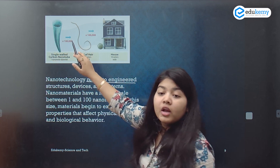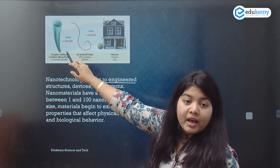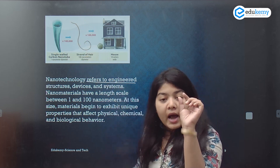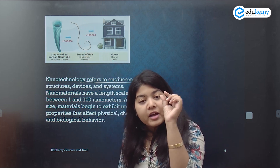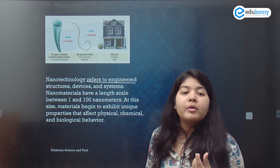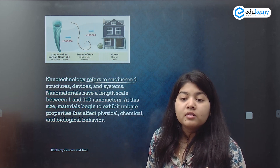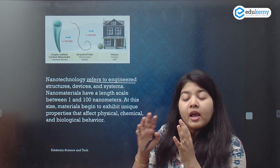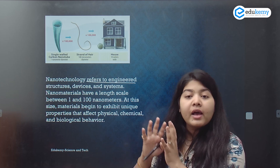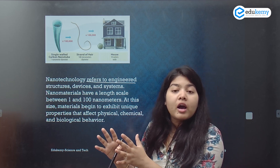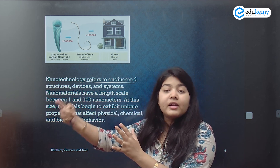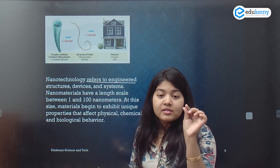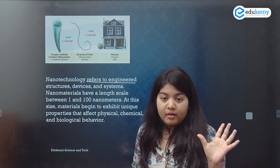For example, this is a single-walled carbon nanotube. If you multiply it one lakh times, it is as thick as a strand of hair. Can you imagine how small a carbon nanotube is — that a single-walled carbon nanotube multiplied one lakh times is as thick as a single strand of your hair?